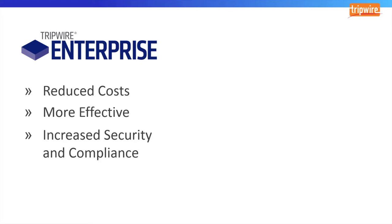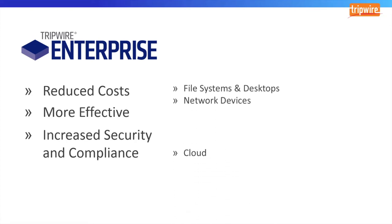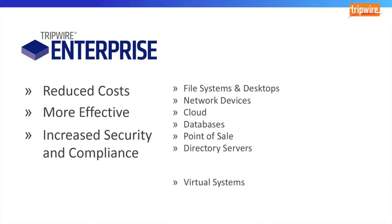Compliance policies offer detailed controls about how systems should be configured, but it can be very challenging to understand how to evaluate a system to see if it's configured in accordance with the control. Tripwire Enterprise helps by providing an ever-expanding library of policy content that knows how to evaluate for compliance in a variety of endpoints, including operating systems, applications, databases, directory services, network devices, and virtual hosts.